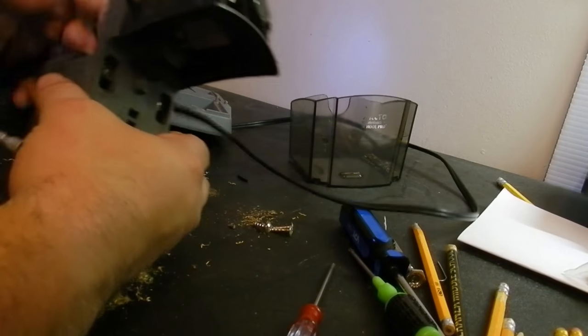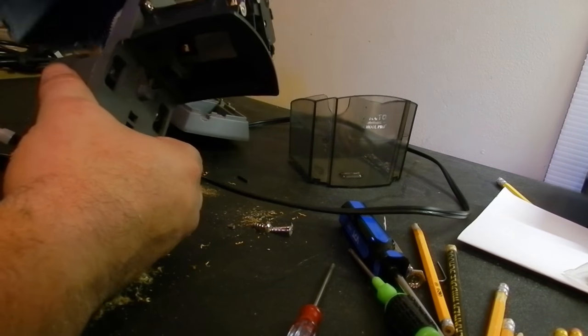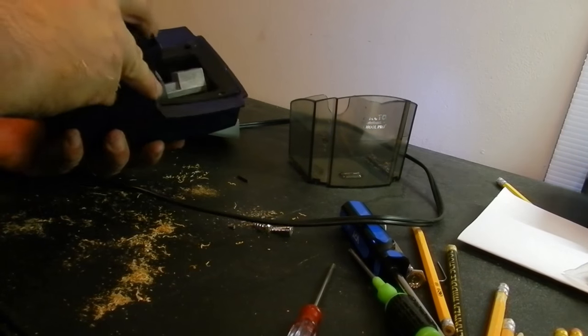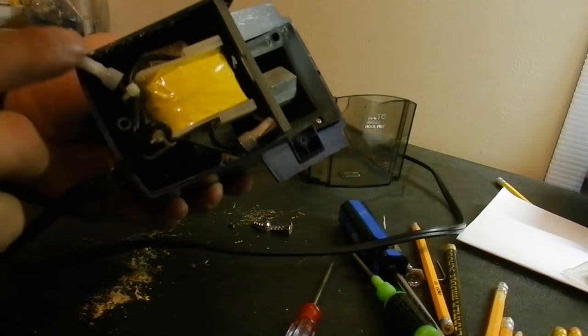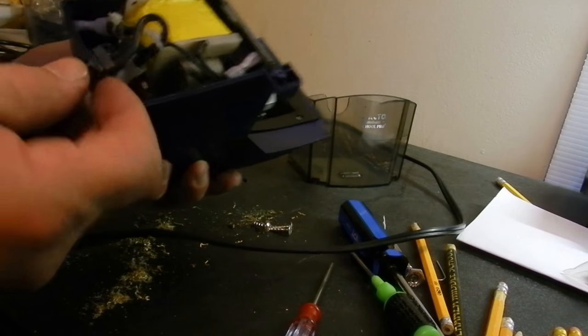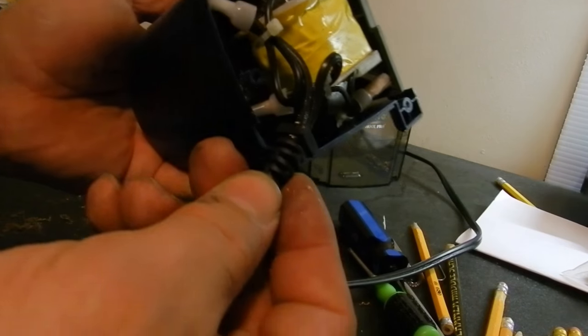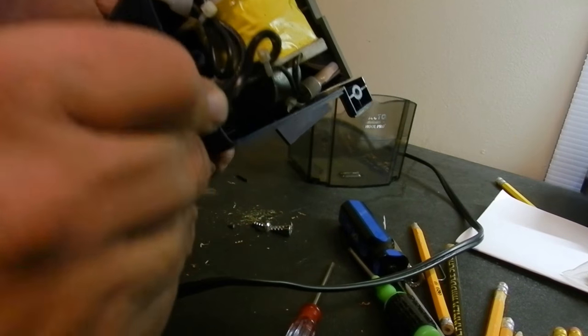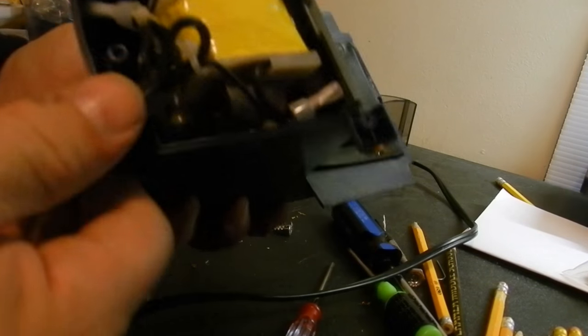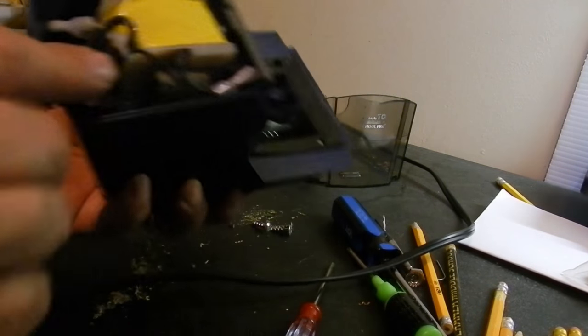So now I'm going to put this guy back together. Just go in reverse. This goes on first, on top. Turn this over, drop it right in. All your plastic here has to be inside. This guy right here, this little piece right here has to slide in there. Because that's what's stopping the cord from actually being pulled out of the whole unit. So make sure that's in there.